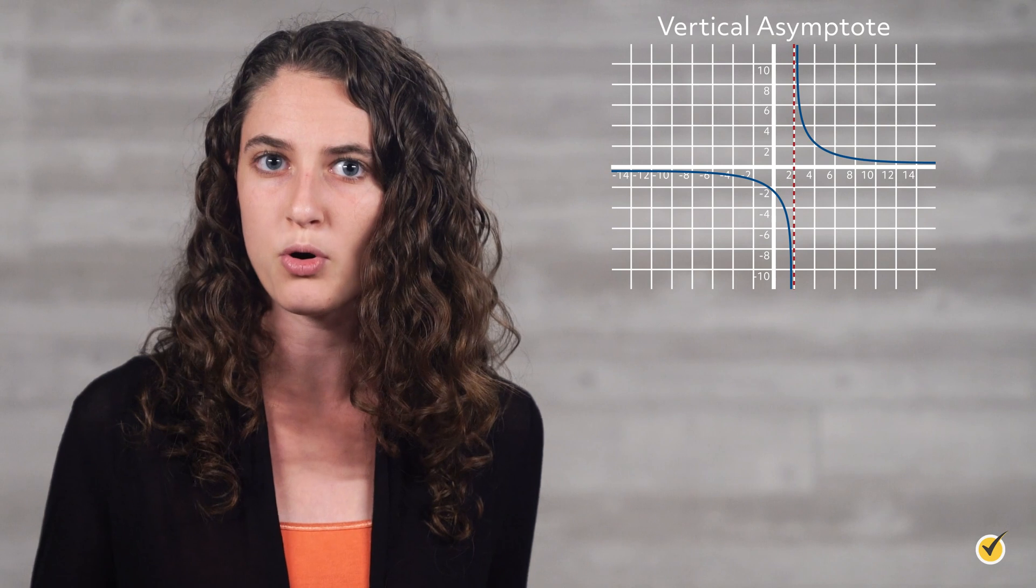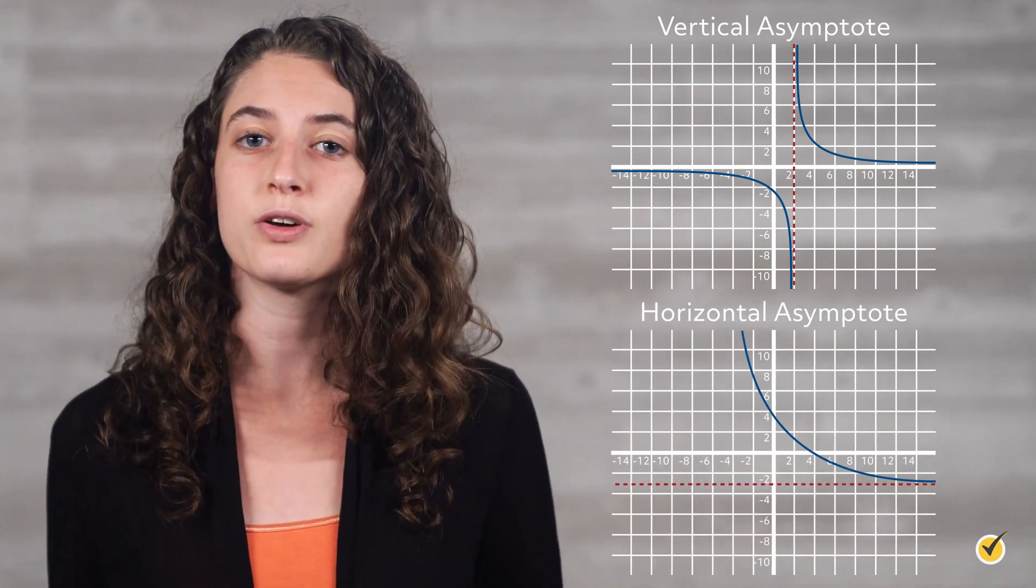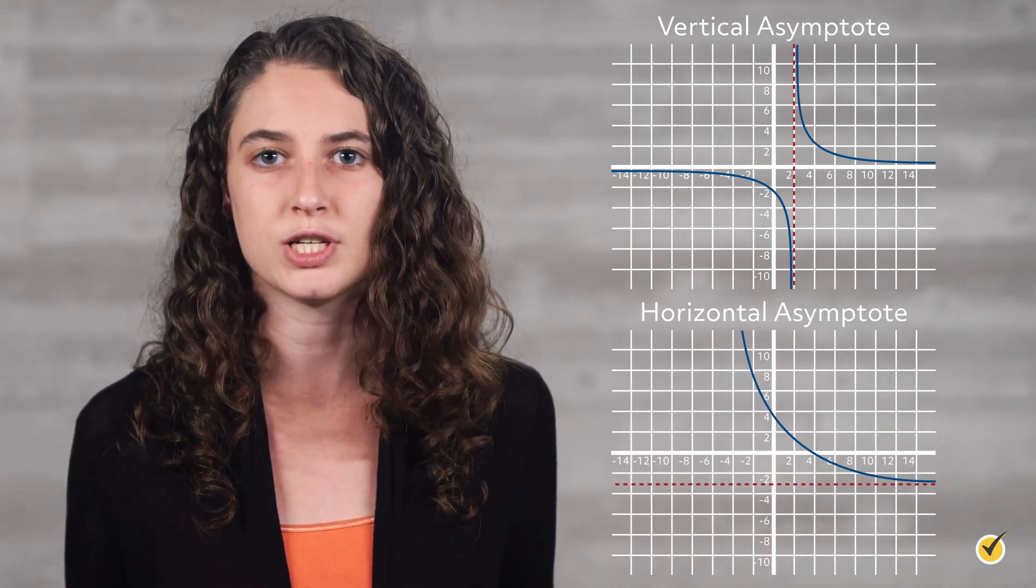When it comes to functions and their graphs, one thing we may be interested in studying and looking for is asymptotes. An asymptote is an invisible straight line that a function may get closer and closer to. For example, a vertical asymptote is where a function shoots straight up or down, and a horizontal asymptote happens when a function gets flatter and flatter over time.